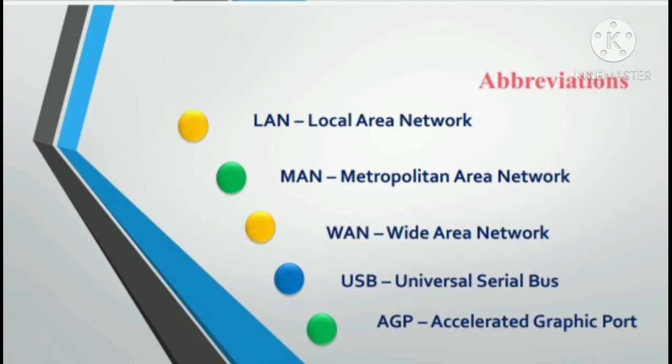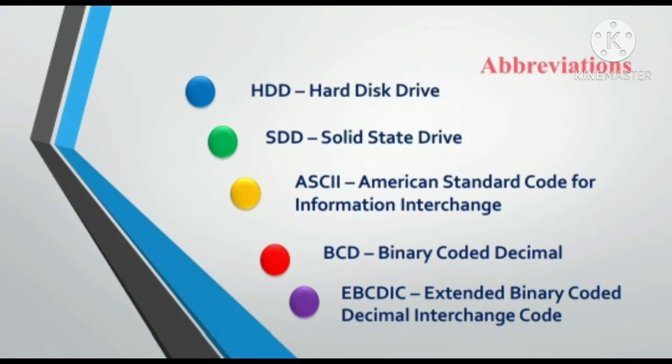Then comes USB: Universal Serial Bus — this is actually our pen drive, it is a USB. Then AGP: Accelerated Graphics Port. HDD: Hard Disk Drive. SSD: Solid State Drive. Then comes ASCII: American Standard Code for Information Interchange. BCD: Binary Coded Decimal. EBCDIC: Extended Binary Coded Decimal Interchange Code.